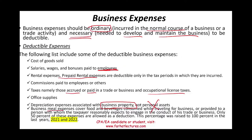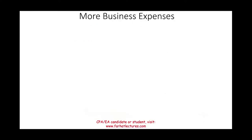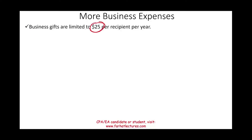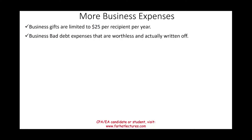Business meals cover food and beverages consumed while traveling for business or provided to a person with whom the taxpayer reasonably expects to conduct business. Only 50% of these expenses are allowed as a deduction — the assumption is 50% is yours. Note: this percentage can change; for 2021 the government allowed 100%. Business gifts are limited to $25 per recipient — you may give more, but you can only deduct up to $25 per recipient.